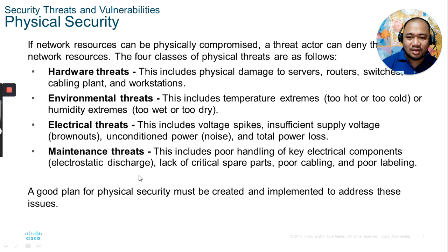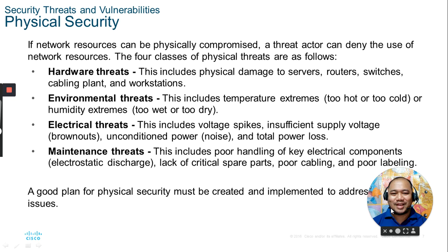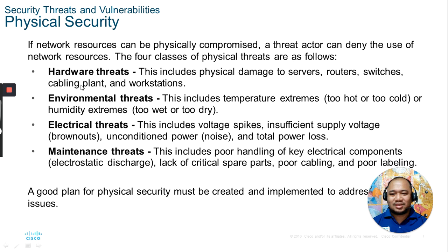Physical security refers to tangible, visible threats. If a network resource is physically compromised, an attacker can deny the use of network resources. Four classes of physical threats are: hardware threats, environmental threats, electrical threats, and maintenance threats. Hardware threats include physical damage to servers, routers, switches, cable plant, and workstations — intentionally destroying or damaging physical equipment. For cabling, proper cable management with labels on each port end helps detect and restore connections.